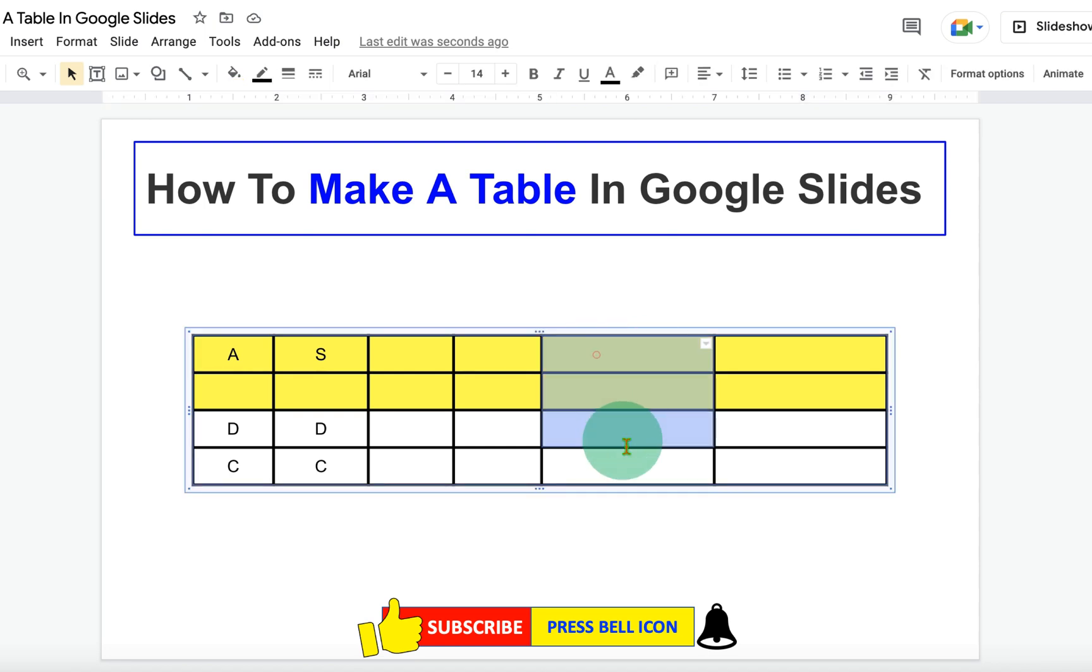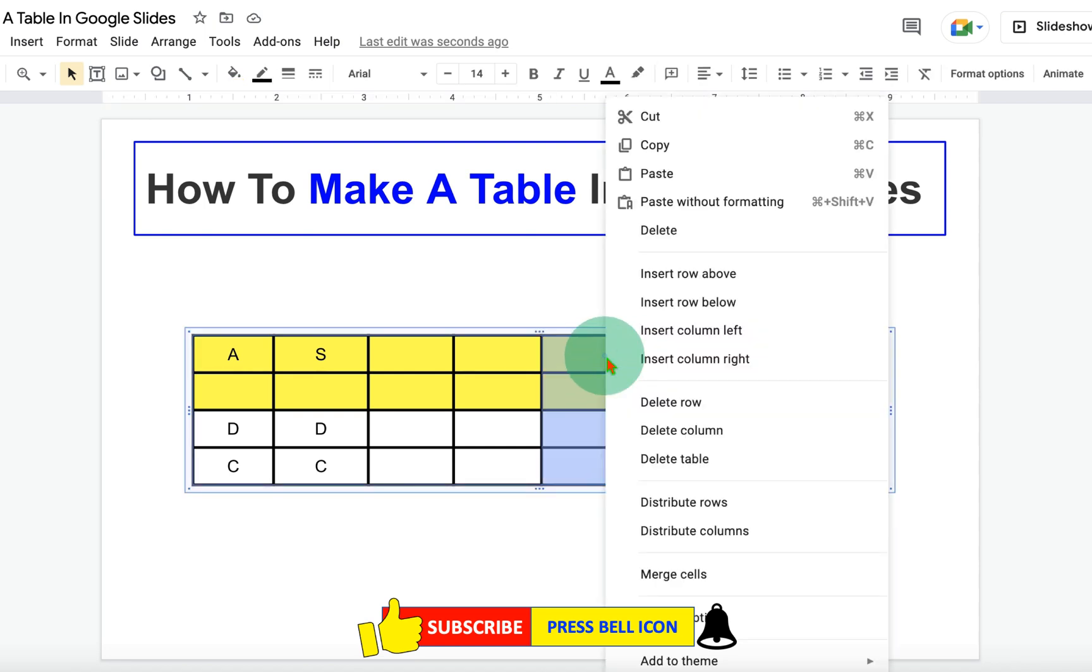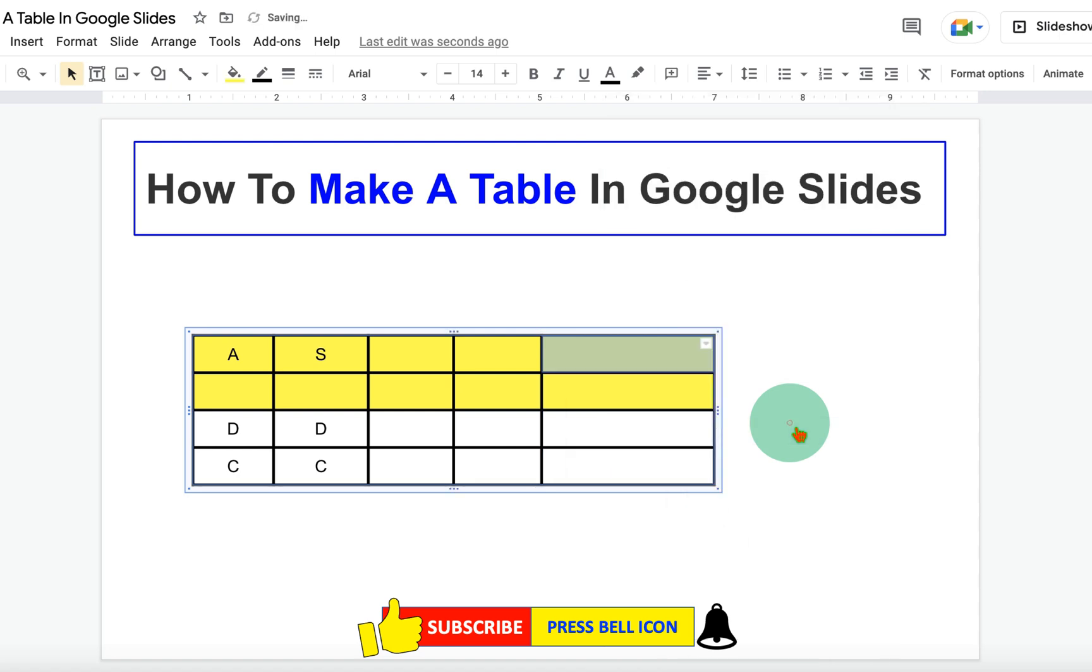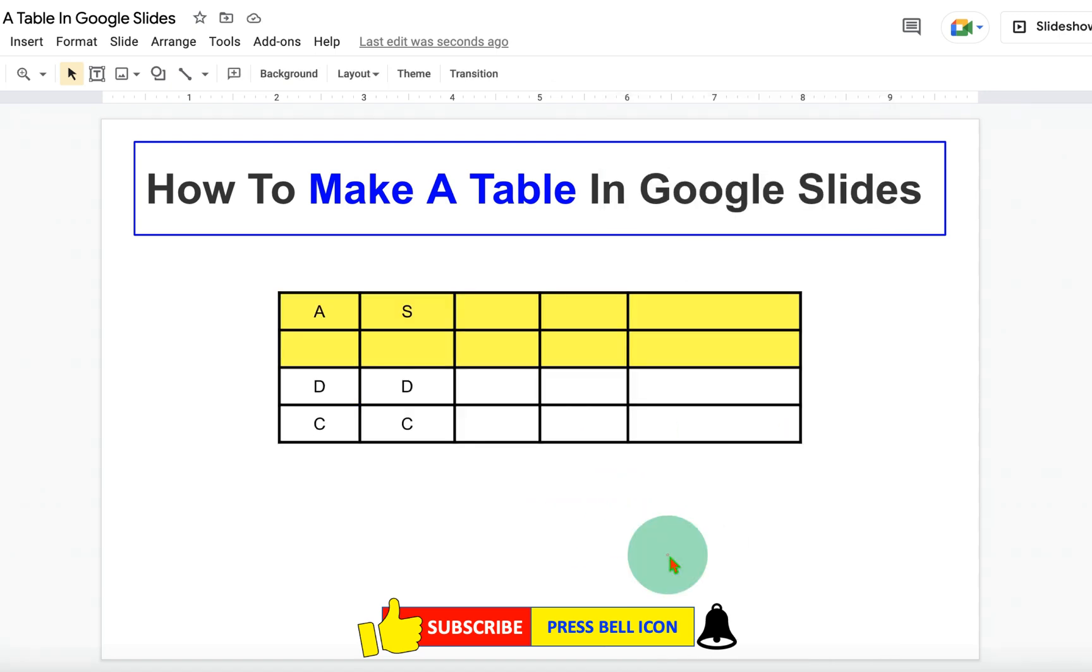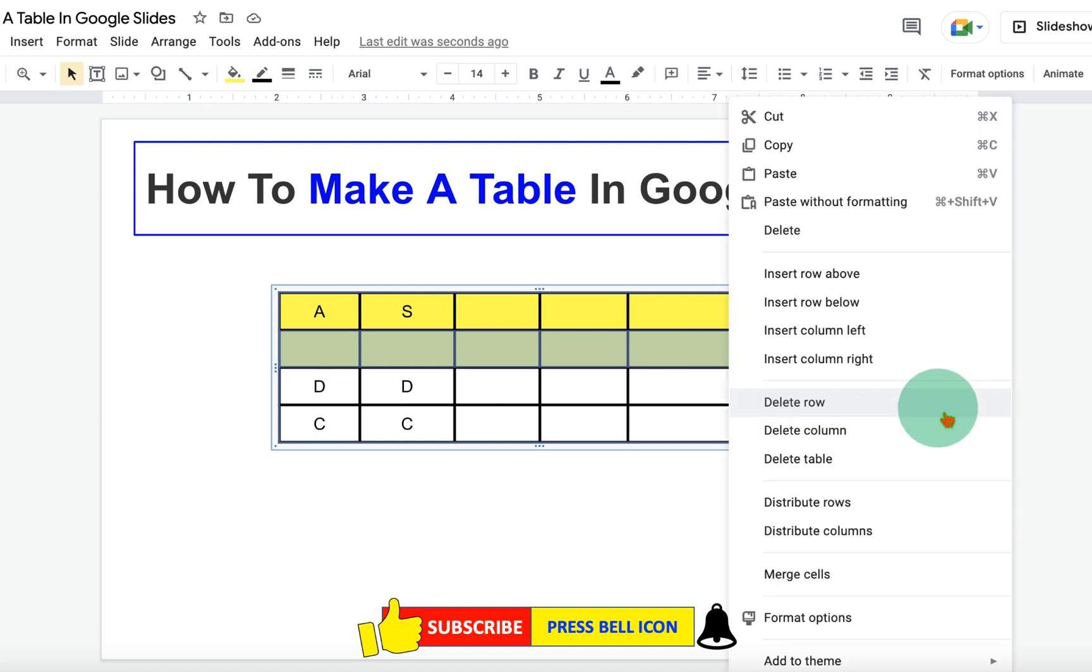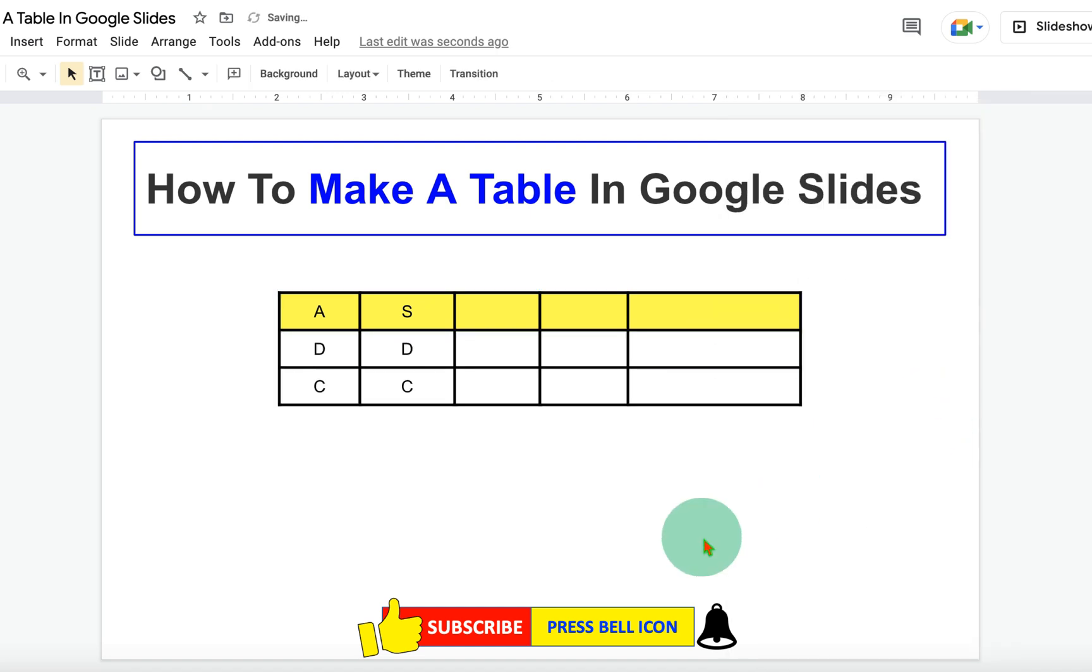If you want to delete a column, then select the column. Right click and click on Delete Column. This will delete the column. If you want to delete row, then select the row and hit Delete Row to delete the row.